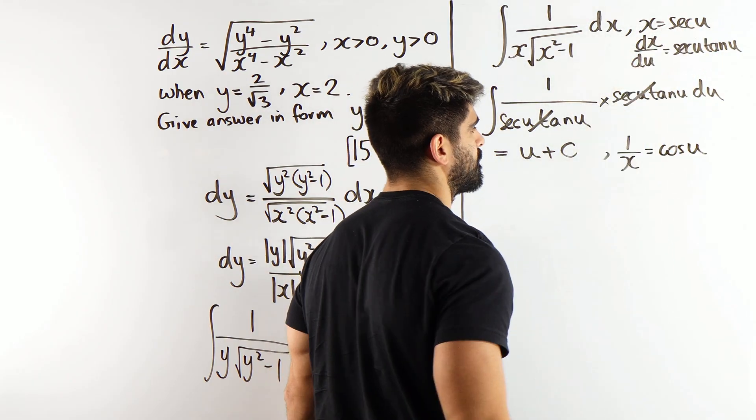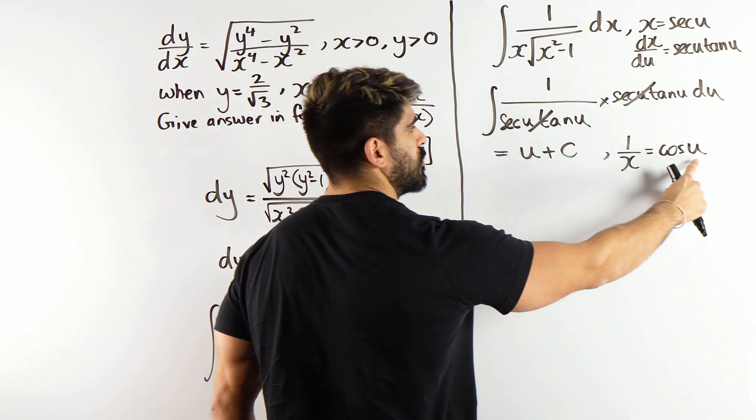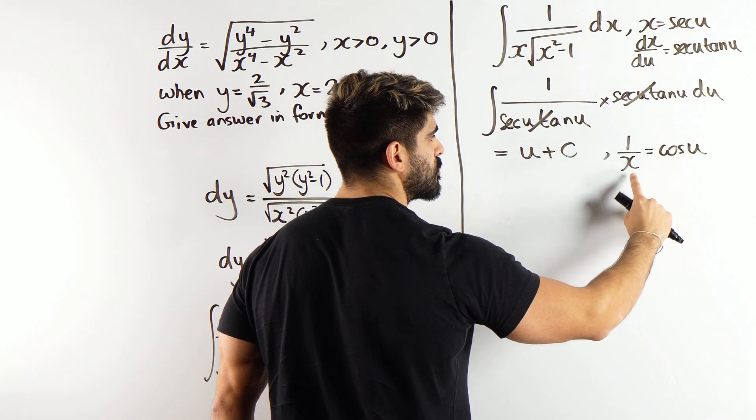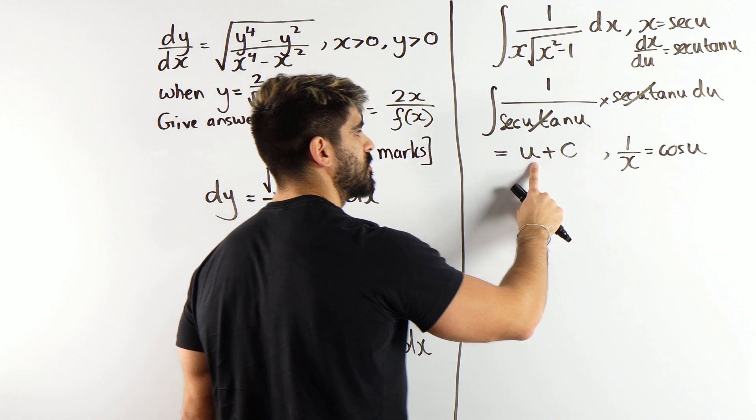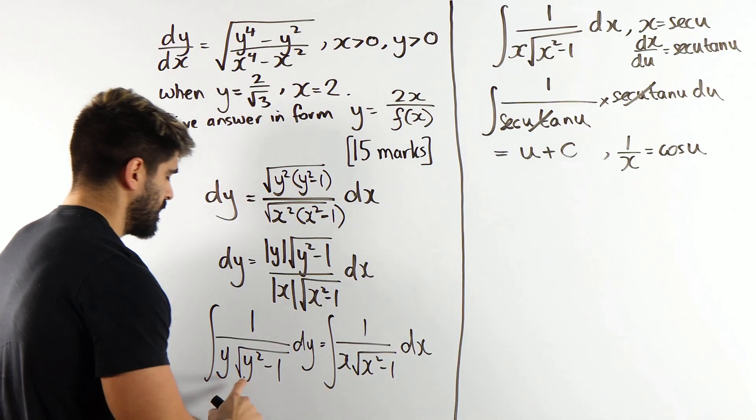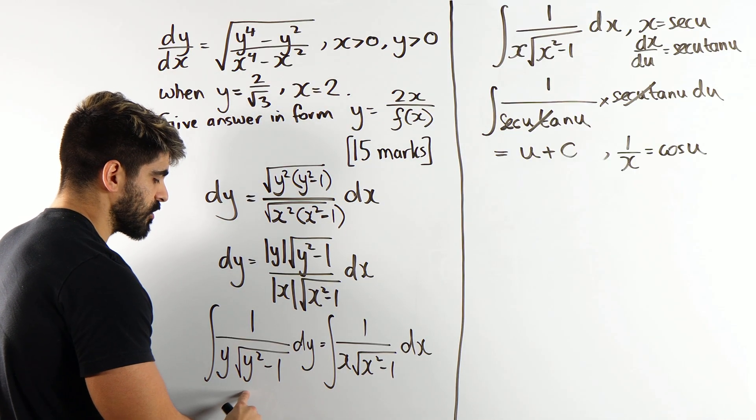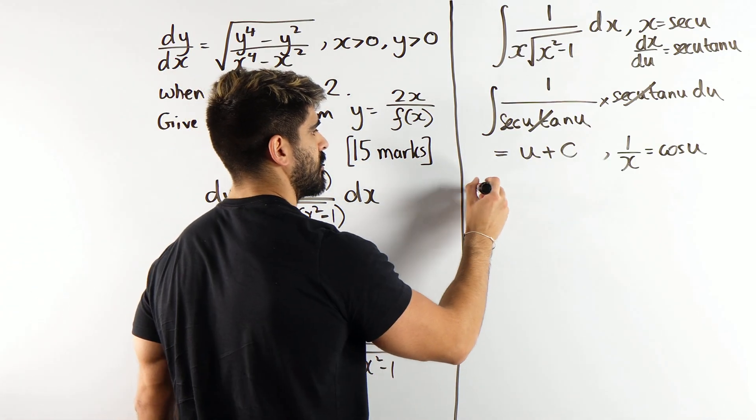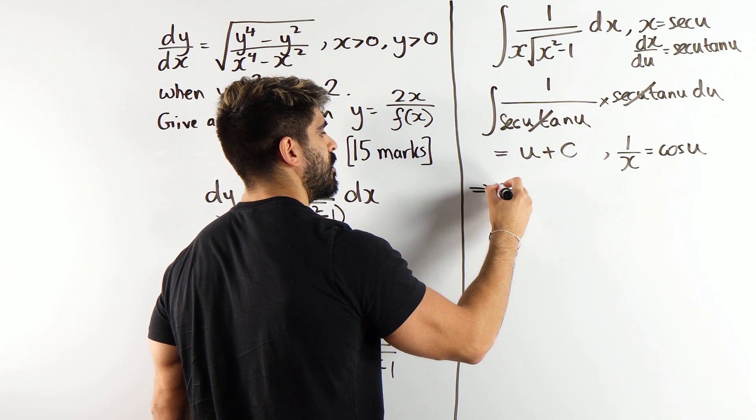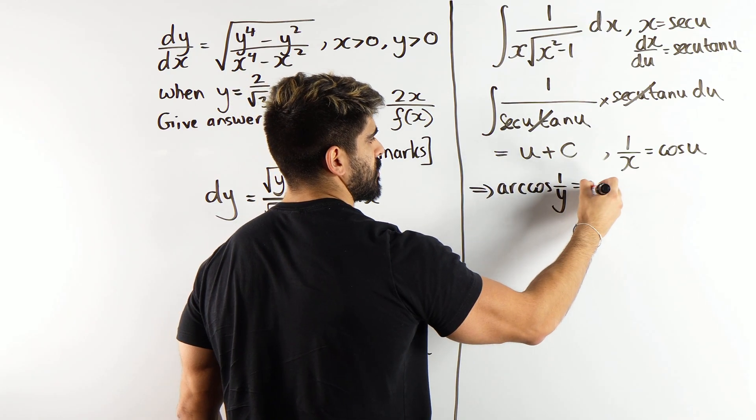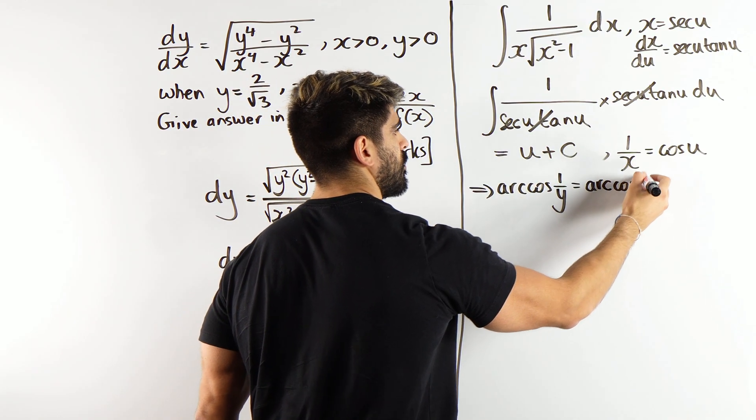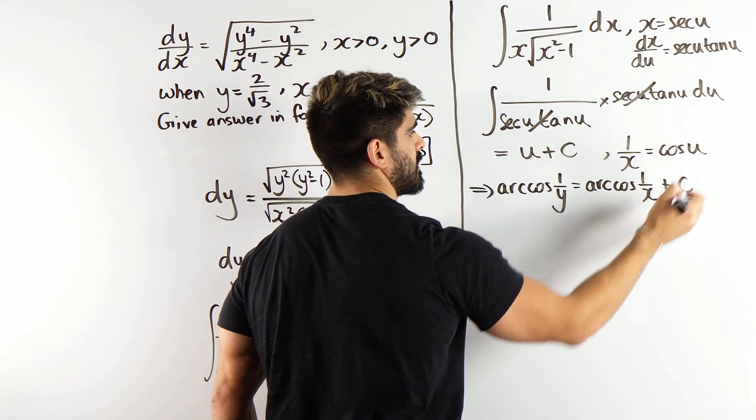1 over x is cos u, right? So, we're just reciprocating. Which is better, because now u is arc cos of 1 over x. So, this is arc cos of 1 over x. So, here we would have arc cos of 1 over y. So, our expression is now arc cos of 1 over y is arc cos of 1 over x plus c.